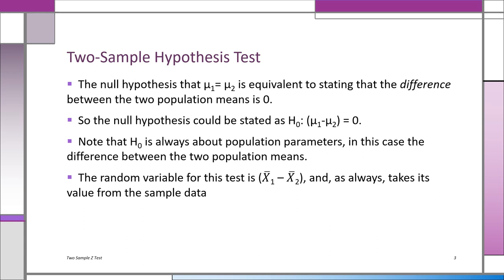The null hypothesis, when comparing means, is that mu1 equals mu2 — the population mean of group one is the same as group two — or in other words, mu1 minus mu2 equals zero: no difference. For example, we could be comparing men and women on some measure like GPA. The H0 is always about the population parameters, and the random variable is x̄1 minus x̄2, the difference between the sample means. We use that sample evidence to see if it supports H0 that there is zero difference between the two groups.